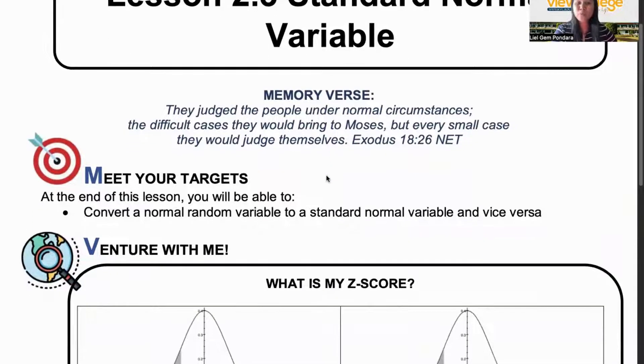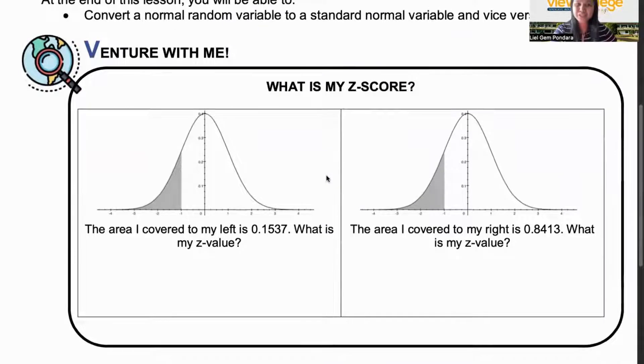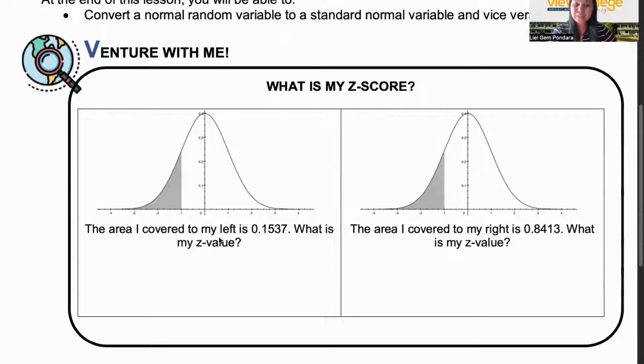At the end of this lesson, we'll be able to convert our normal random variable to a standard normal variable and vice versa. I want you to have your Z table with you. It's very important. So you need to have your Z table with you so we can check on it from time to time. And here's our venture activity. The area I covered to my left is 0.1537. What is my Z value? And the other is, the area I covered to my right is 0.8413. What is my Z value?